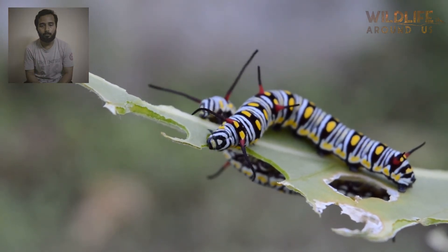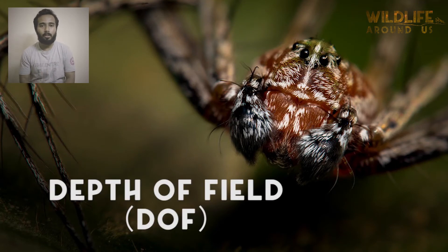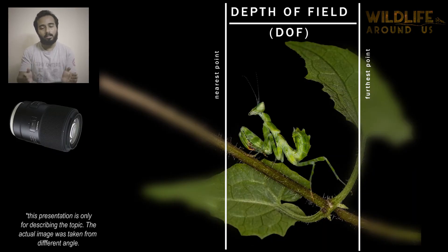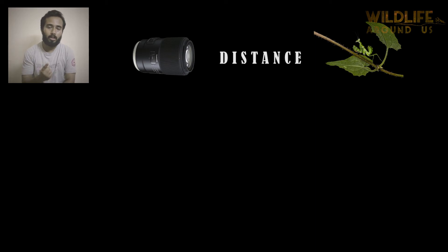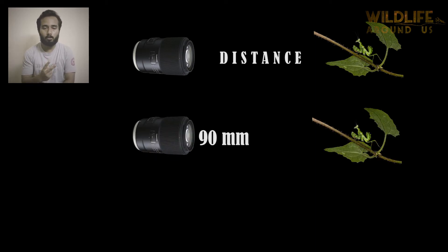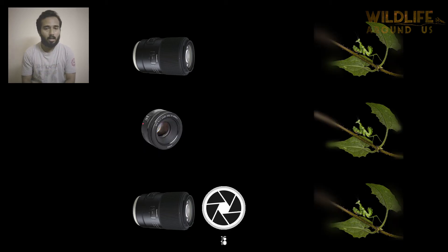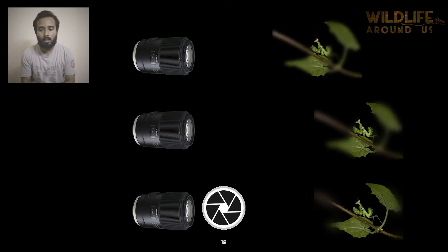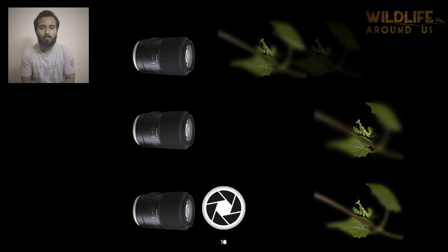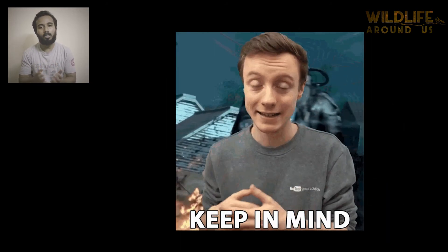The second point is depth of field, or DoF. In a very simplistic manner, depth of field can be described as the nearest and farthest point in an image where it is acceptably in focus or acceptably sharp. Depth of field depends on three main factors: the distance of the subject from your lens, the focal length of the lens you are using, and the aperture you are using. I will cover this in detail in a separate video — for now, just keep in mind that depth of field is a very important factor in macro photography.